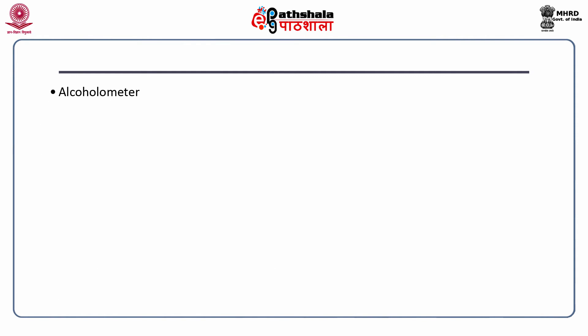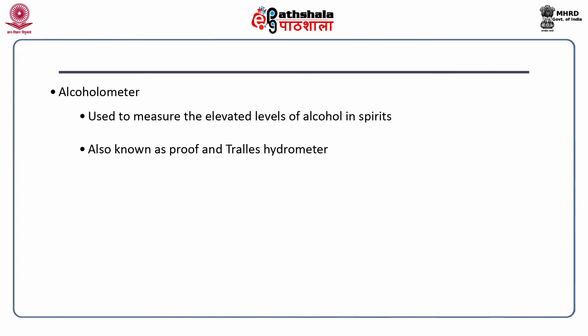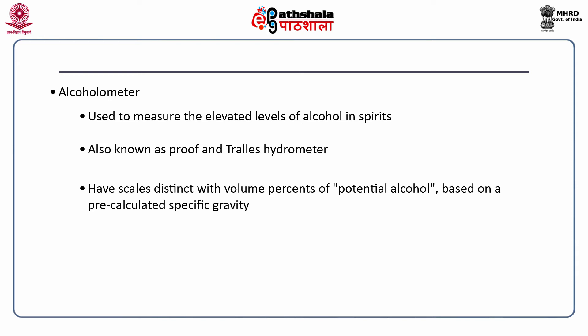The maximum usage of hydrometer is found in the alcoholometer, which is used to find the elevated levels of alcohol in spirits. This is also known as a proof and trials hydrometer, used to find out the alcohol percentage in spirits. It works very well in finding the percentage content of alcohol. The scales are distinct with volumes and percent potential alcohol based on pre-calculated specific gravity. Again, this has to be done at a specific temperature.